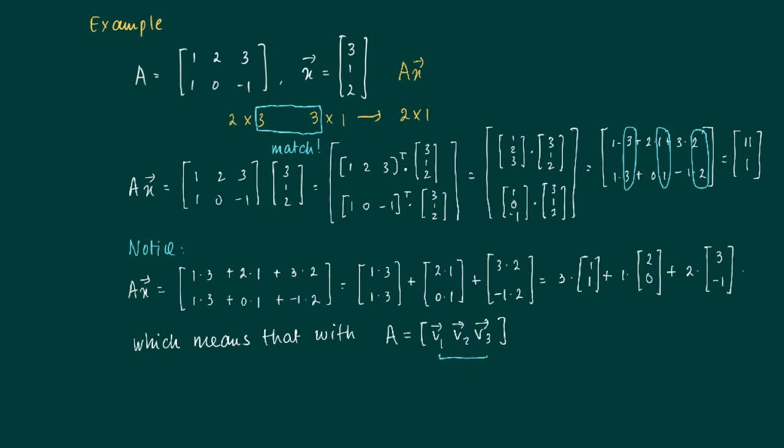So if we write down the columns of A, so instead of row vectors we have now column vectors v1, v2, v3. These are the columns of A.